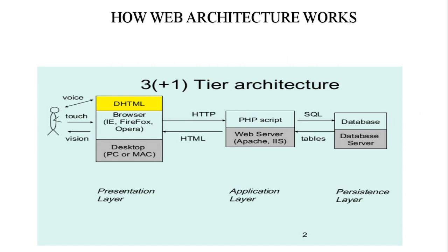This is how the web architecture works. It works on the three-tier architecture, which means the presentation layer, application layer, and persistence layer. For the presentation layer, we have browsers and desktop for displaying output. For the application layer, we use PHP scripts for request and response from the server. And for the persistence layer, we have the MySQL database for data management — that is, accessing the database using your PHP script. So this is the three-tier architecture: presentation layer with display, PHP scripting in the application layer, and the database server as the persistence layer.